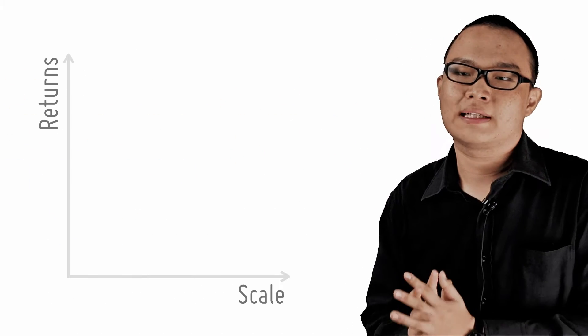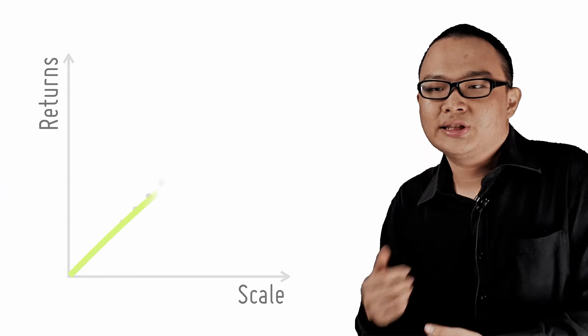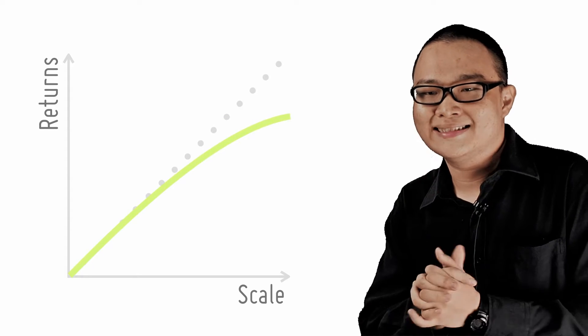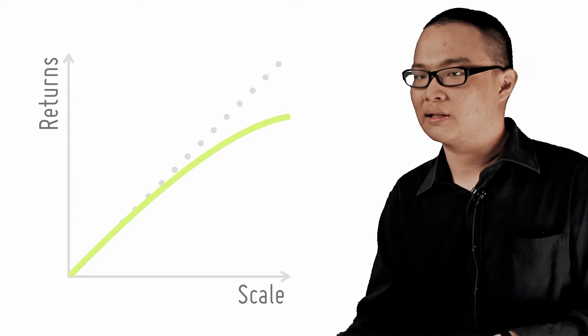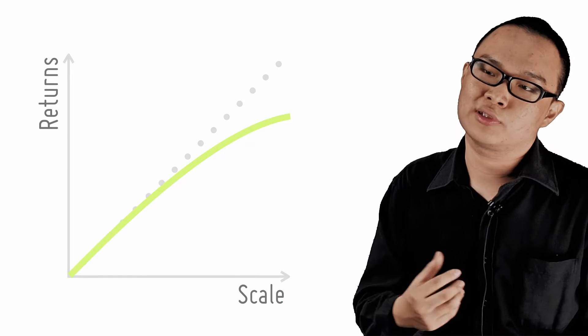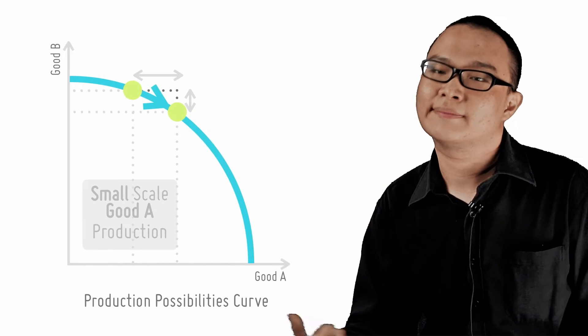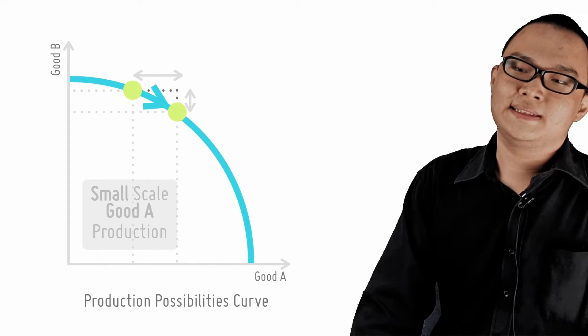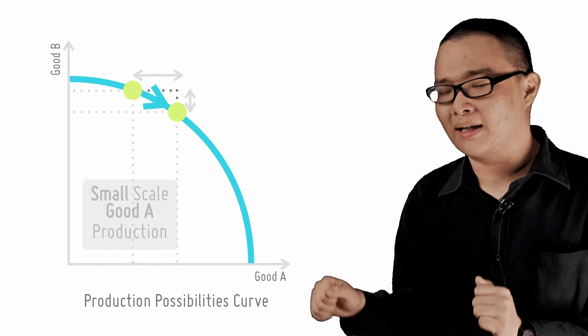However, there is an important caveat. Due to the diminishing marginal rate of substitution, returns are unlikely to be constant regardless of scale. As output increases, more and more ill-suited resources that yield low marginal products have to be employed. Thus, the PPC is likely to be bowed out rather than straight.